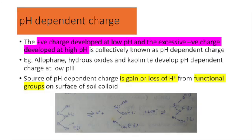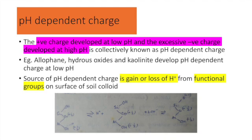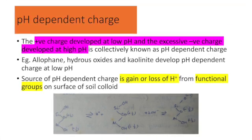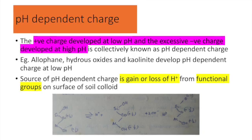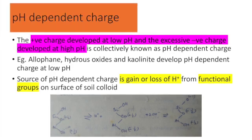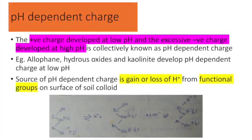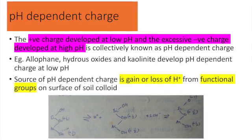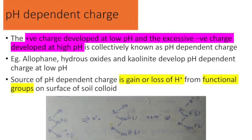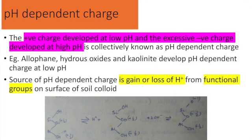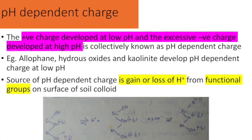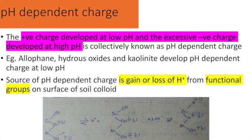The second type of charge is the variable or pH-dependent charge. Positive charge develops at low pH, and excess negative charge develops at high pH — collectively known as pH-dependent charge. Examples include allophane, hydroxides and kaolinite, which develop pH-dependent charge. The source of pH-dependent charge is the gain or loss of hydrogen ions from functional groups on the surface of the soil colloid. At the zero point of charge (ZPC), no net charge has developed. At higher pH with excess OH⁻, negative charge develops, whereas at lower pH with excess H⁺, positive charge develops.